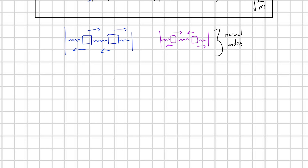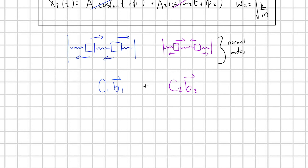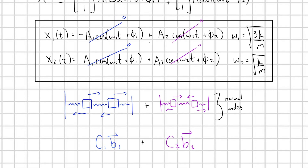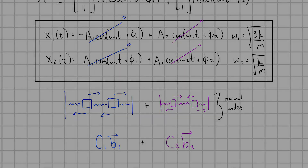Taking a linear combination of our basis vectors, c1b1 plus c2b2, is saying exactly the same thing as saying we can construct our motion as some combination of normal modes. That's how you get the general solution for a coupled oscillator system like this — a pretty simple example where all the spring constants were the same and the blocks had the same mass. I hope this was helpful. Thank you so much for watching.